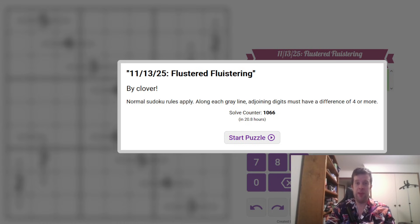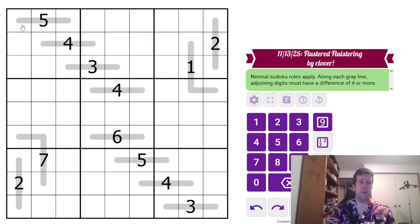Today's puzzle is a Dutch Whispers Sudoku, so what does that mean? It means normal Sudoku rules apply. Each row and each column, I'm feeling the effects of eating a lot of hokkien noodles very quickly. Each column, box is one to nine once each. Now, along each gray line like this thing, adjoining digits must have a difference of four or more. That's it, that's all you need to know to solve today's puzzle. That being said, I'm going to jump into it now, let's do it.